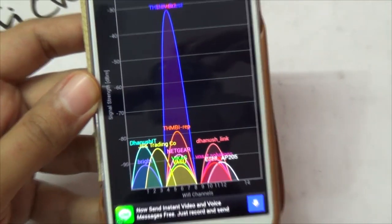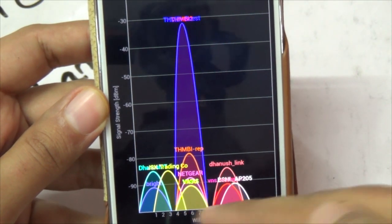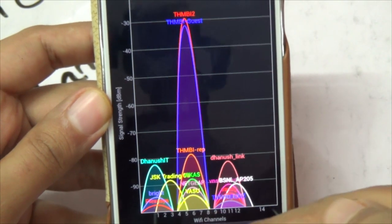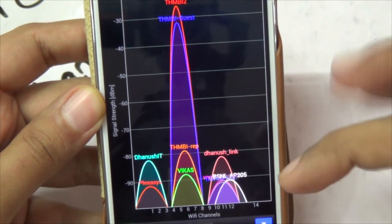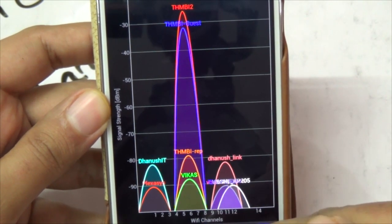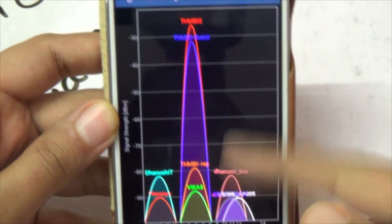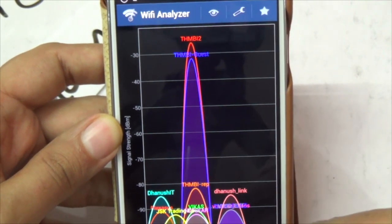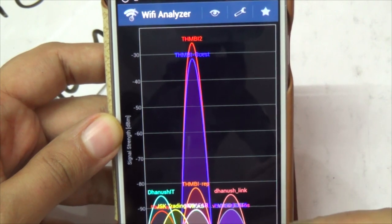If you notice it gives these channels at the bottom: one, two, three, four. These are the actual channels and these are the Wi-Fi networks in those channels. So you need to look at a channel which is actually not very crowded.